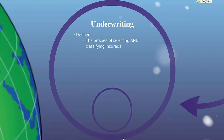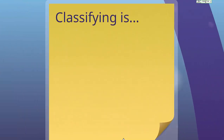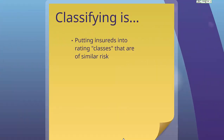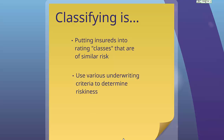Underwriting is defined as the process of selecting and classifying insureds, or sometimes insured exposures. Classifying means putting insureds into rating classes that are of similar risk. Companies use various underwriting criteria to determine riskiness. For example, if you're underwriting homeowner's insurance, rating factors include type of construction, year built, fire class or fire protection code. All of these are important in determining the class of risk, but one of the most important things is loss history. You can see more examples with respect to car insurance rating factors at an article on carinsurancelist.com.